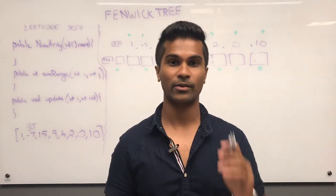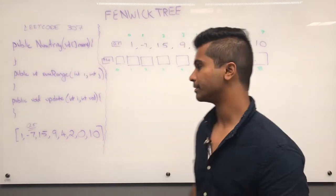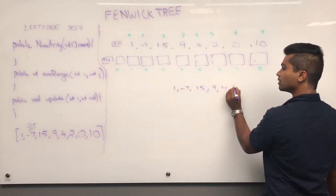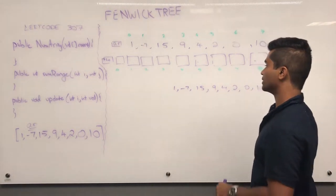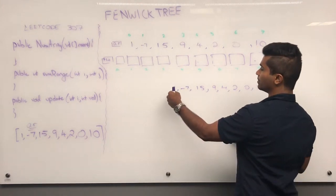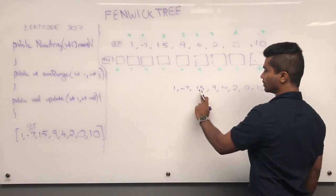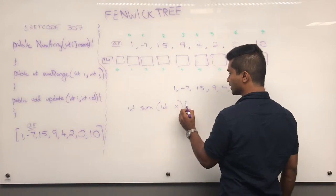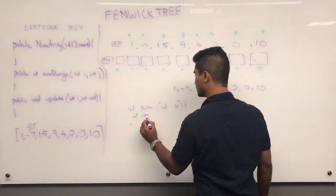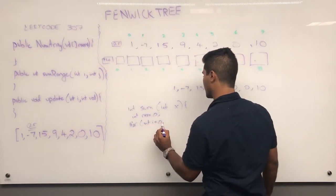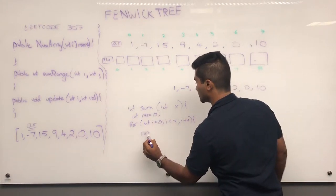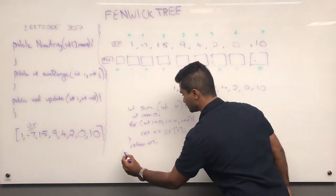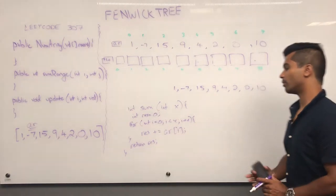Before we even talk about a Fenwick Tree, let's look at an array and two very common operations we do on the array. Two very common operations we do: we want to find out the sum between the beginning and some index. So we have int sum, we give it an index x, int result, and for int i, i is less than x, i++, res is incremented by ar[i], and then we return result.